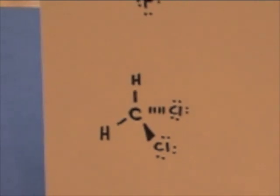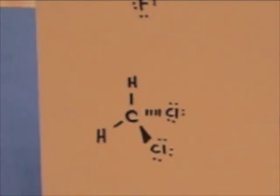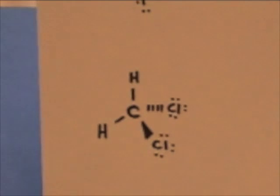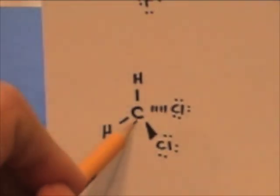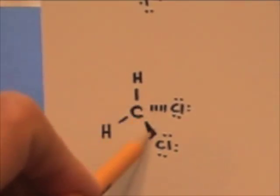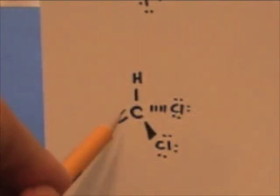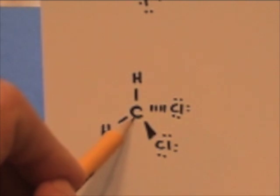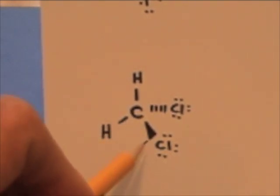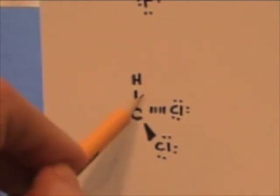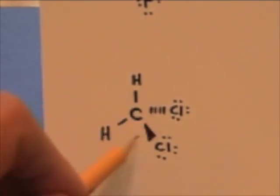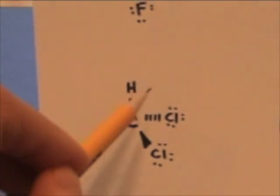Let's use valence bond theory to make predictions about these molecules. This central carbon has four electron regions around it, so we know it's tetrahedral, sp3 hybridized. We expect a 109.5 degree bond angle. There are no empty p orbitals because all three p orbitals were used to hybridize into this molecular shape.